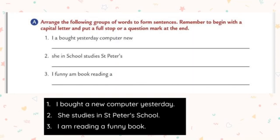One way to remember the difference: the subject will be a noun or pronoun. The predicate will contain the remaining part of a sentence — what the subject is doing or what the subject is. Let us see an example: 'The man stood at the gate.' Who stood at the gate? The man. So the subject is 'the man,' and 'stood at the gate' is the predicate.